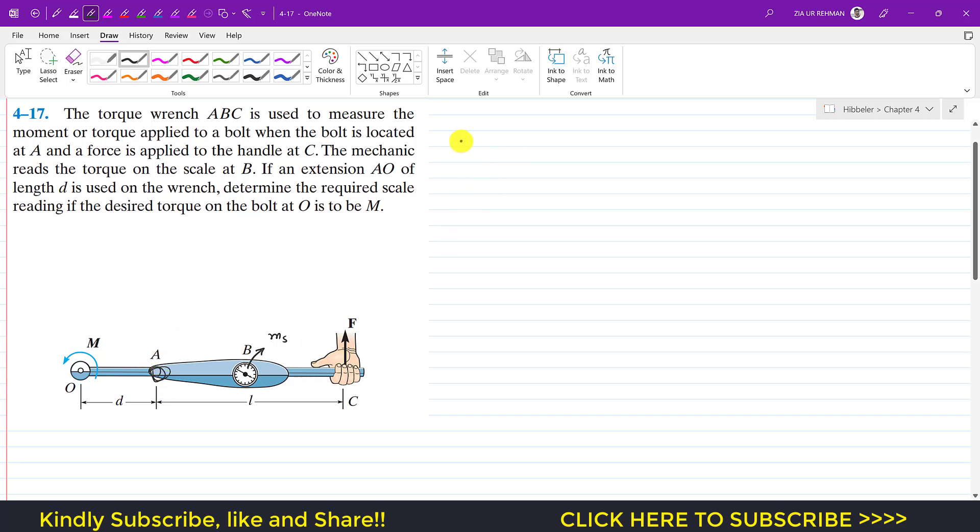Now we can write that the moment of the scale will be equal to F, this force F multiplied by its perpendicular distance from point A. The perpendicular distance of this force F from point A is L. So whatever force F is applied, multiplied by this L, that will be the scale reading and that is M_S.